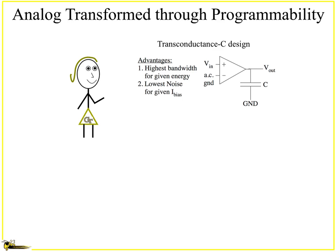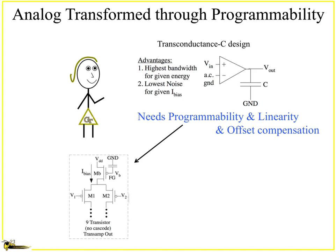Now you have to understand that this really changed the way you do analog design. Just taking a look at transconductance design, which we really love using because it has the highest bandwidth for given energy and the lowest noise for given bias current, but it really needs programmability. You need to have high linearities in certain places and you need a way to compensate for the offsets.